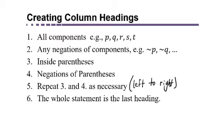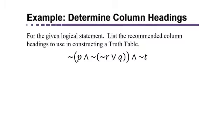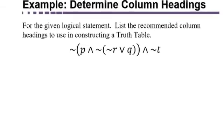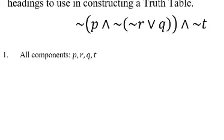So jot these down. We want the components, any negations of components inside the parentheses, negations of parentheses from left to right. Repeat. Generally, your statements are not going to be this complicated, but I just want to make sure we know how we would set up the headings for something like this. So first you would need each of the components, right? So the components are P, R, Q, and T.